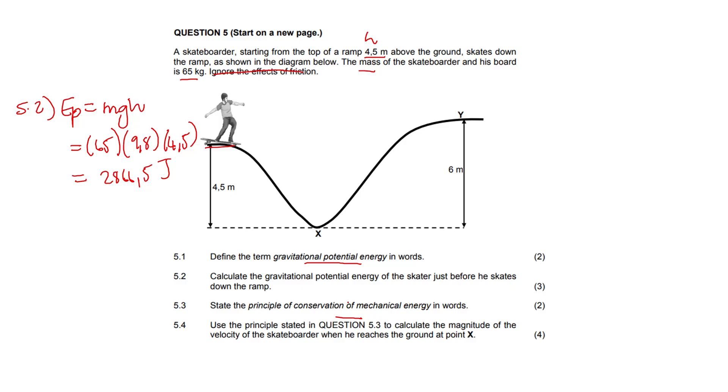Question 5.4: Use the principle stated in 5.3 to calculate the magnitude of the velocity of the skateboarder when he reaches the ground at point X. So when he reaches right here.